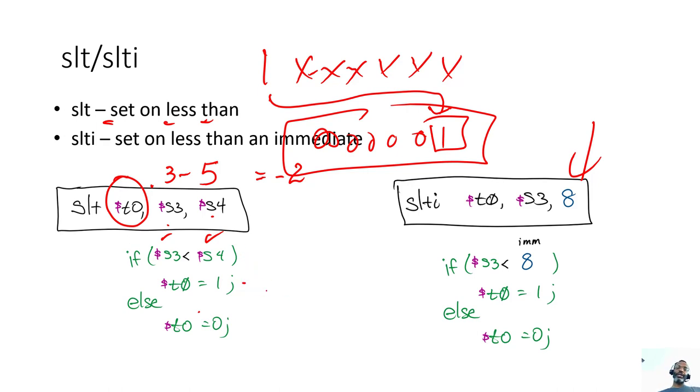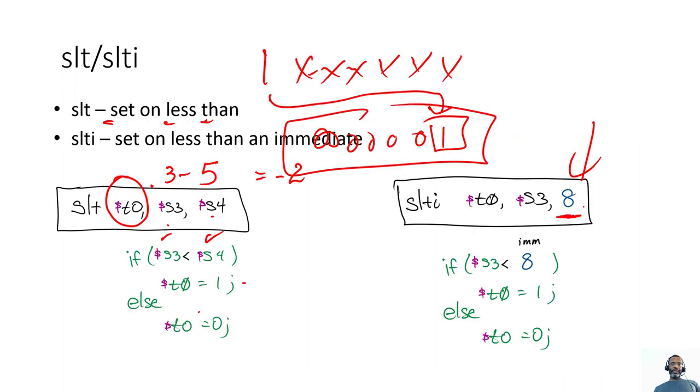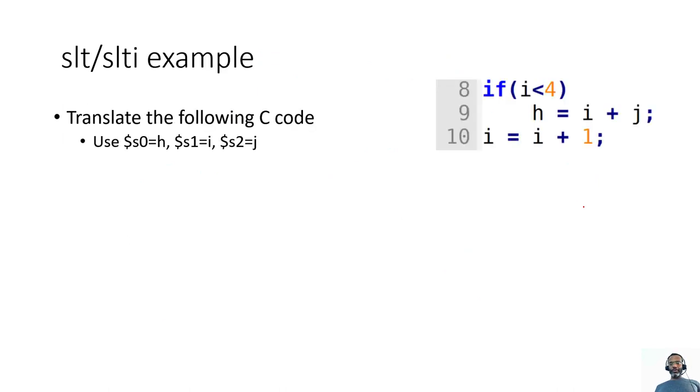So that's how set on less than works, and it's similar if we're working with an immediate value. An immediate value is what we often call a constant. We call it an immediate value because it's embedded in the instruction. So on the next part of this, we'll look at an example of a set on less than, set on less than immediate implementation. So this will be the next video clip.